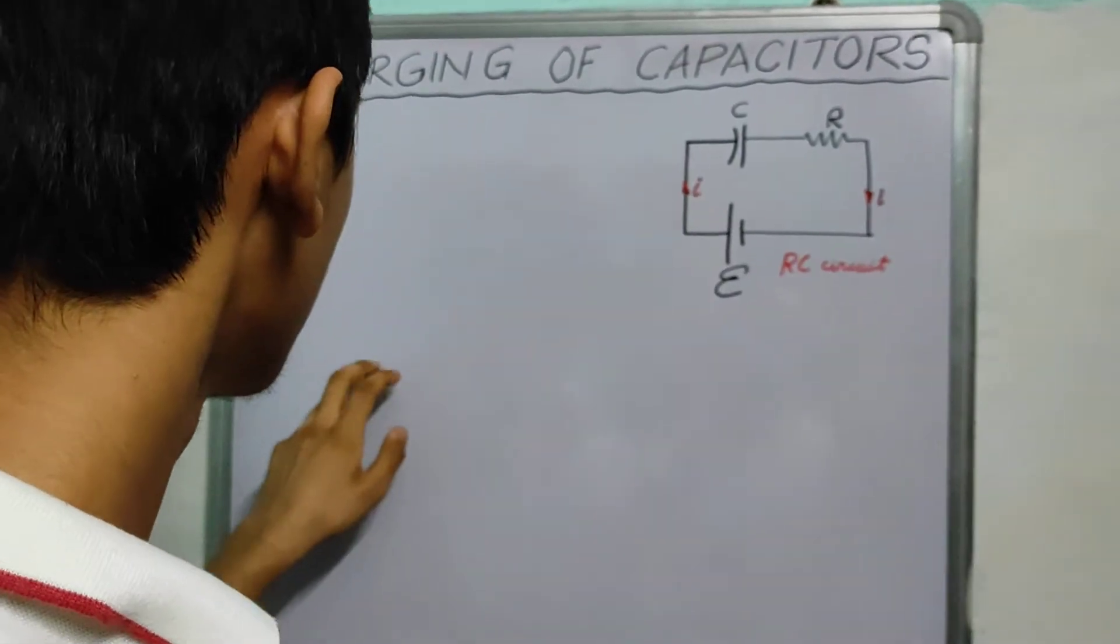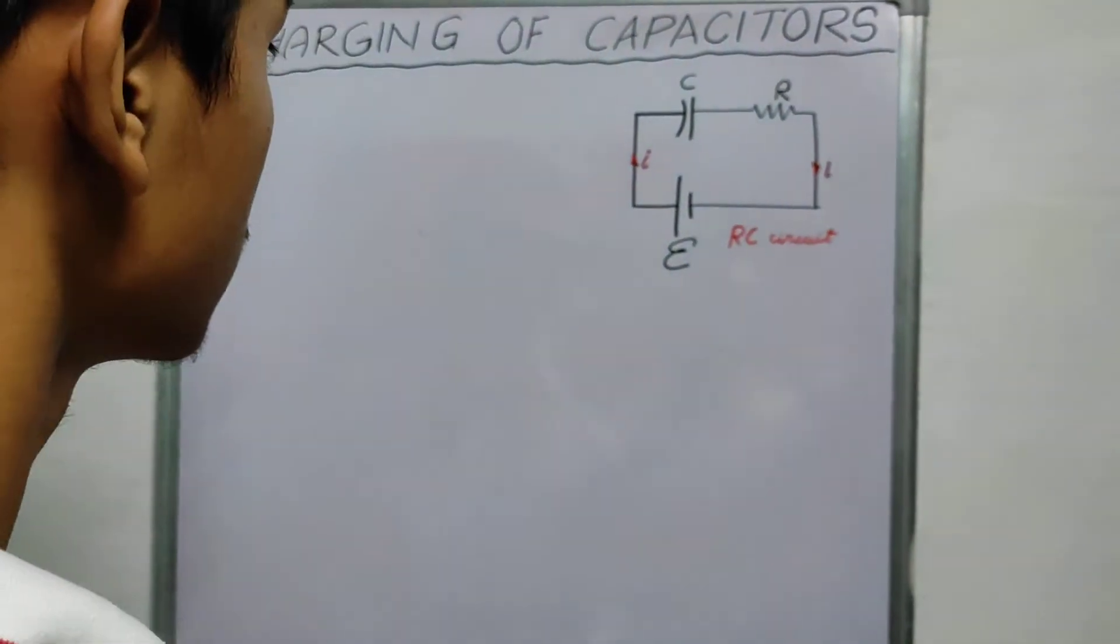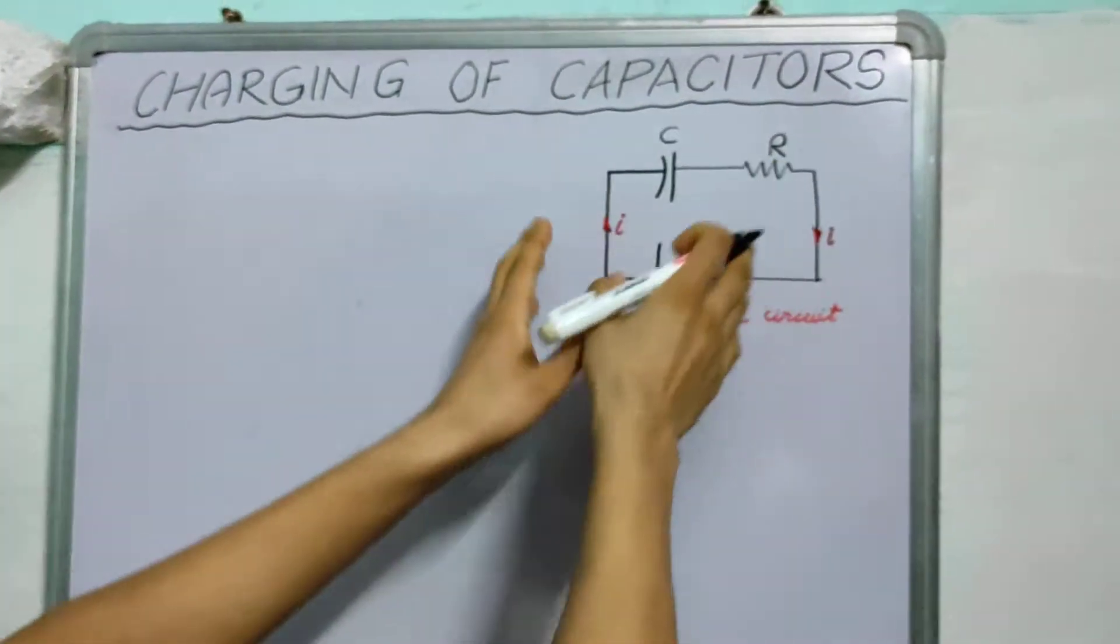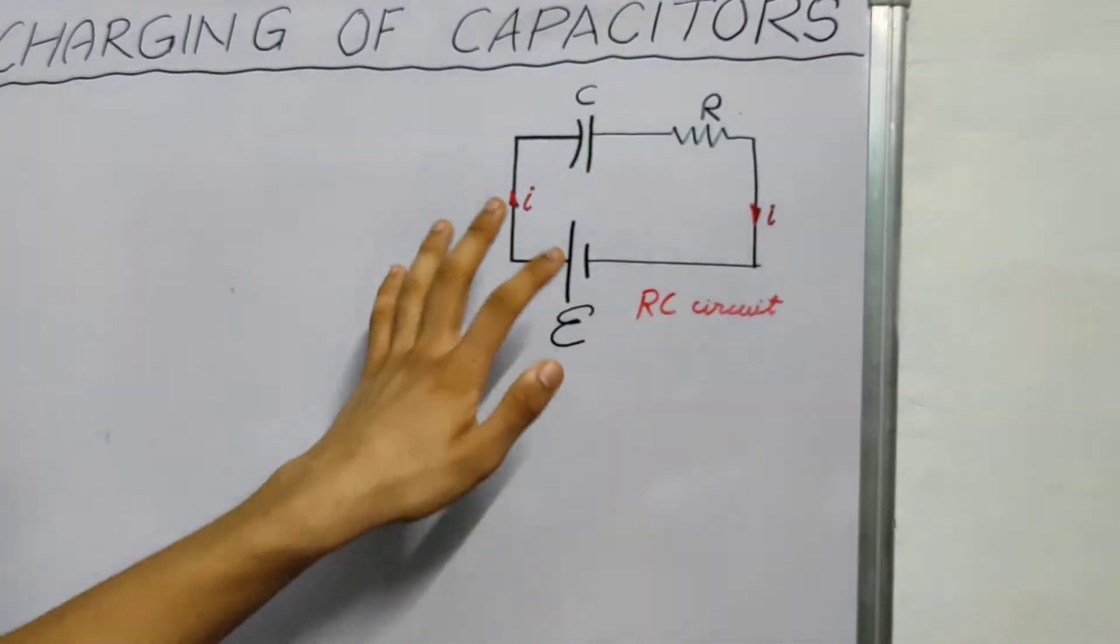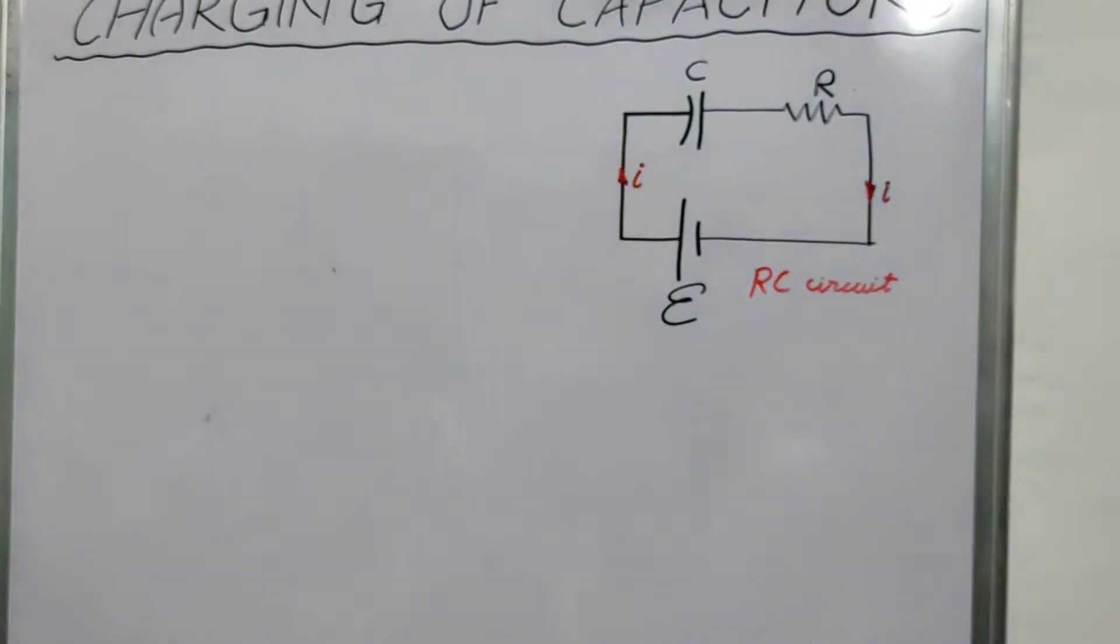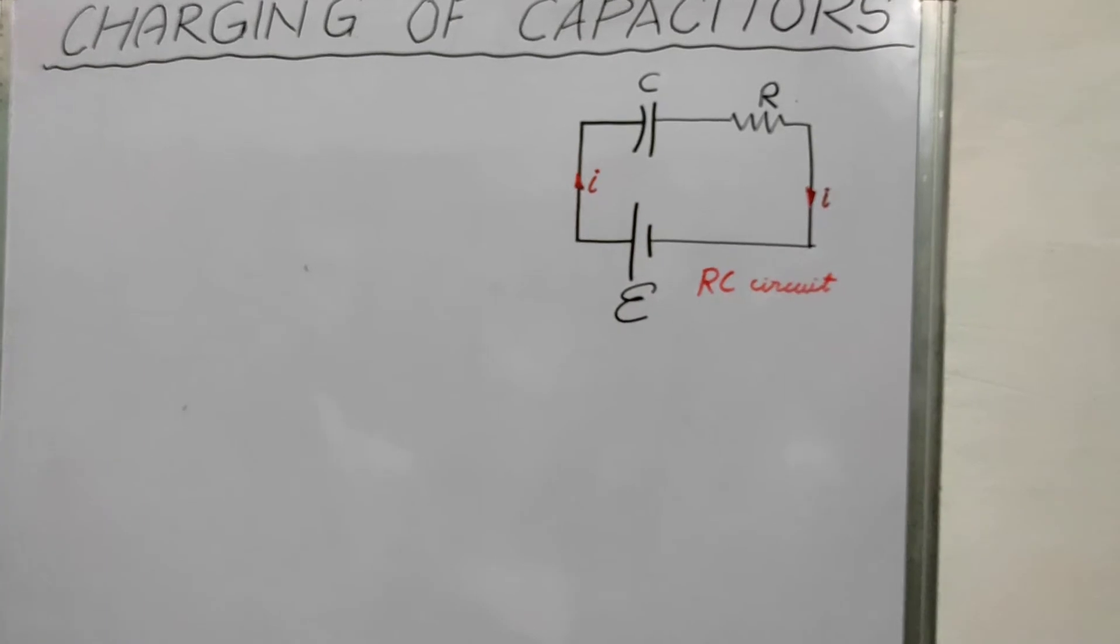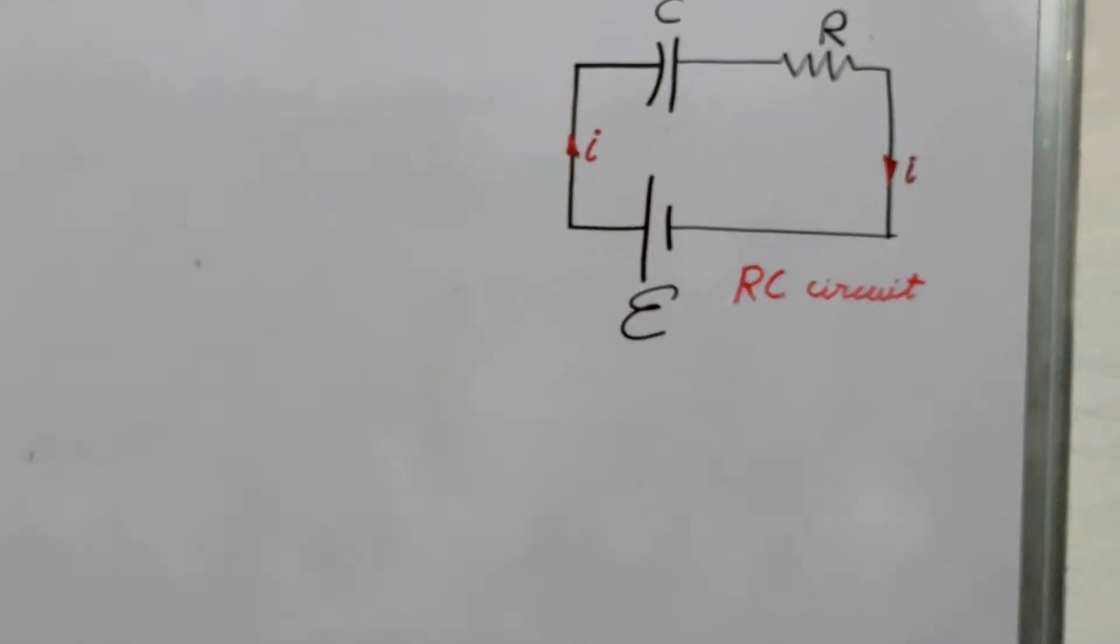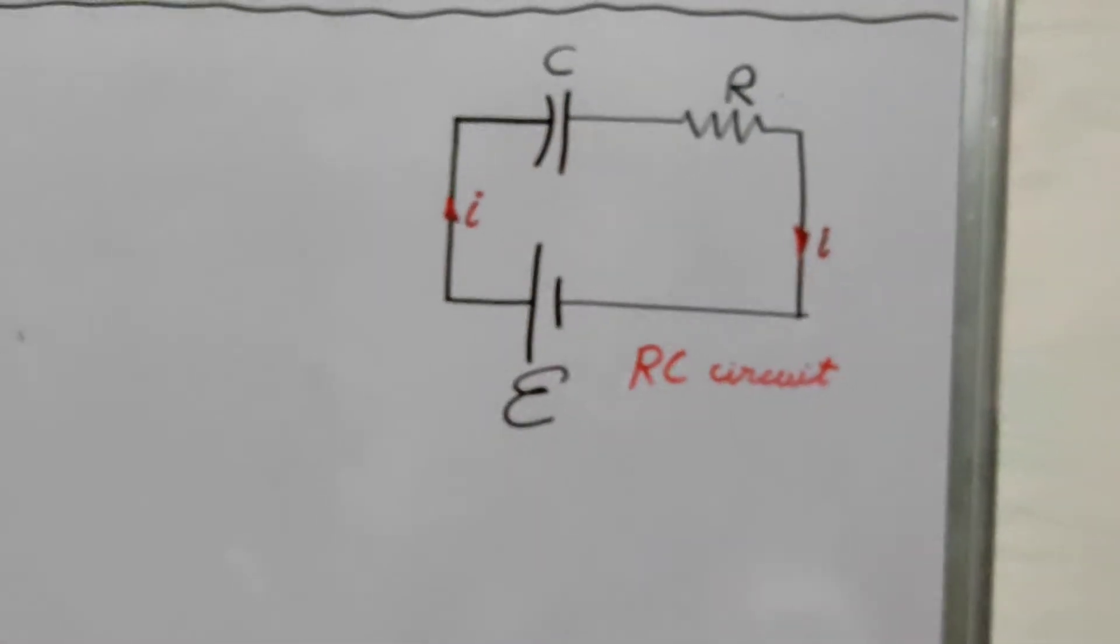Now we need to relate all these things. We need to relate R, C, I, E. All these variables. How do we do this? Well we use a law. We use Kirchhoff's Loop Law.